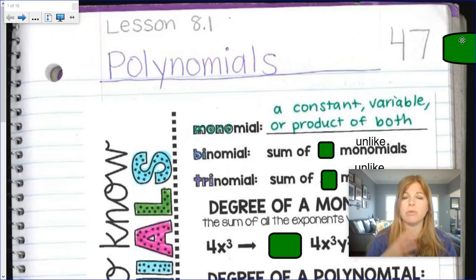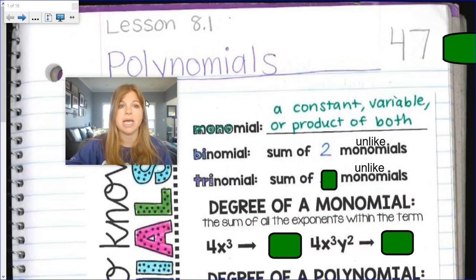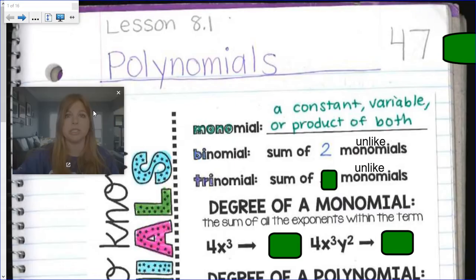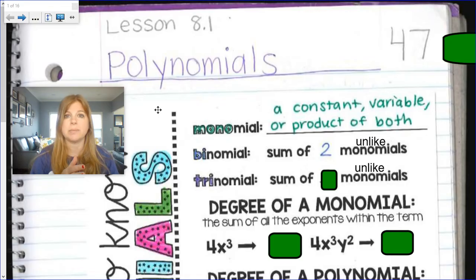So once we know what a monomial is, a binomial is the sum of two unlike monomials. And I say unlike because we need to make sure that we know that 3x plus 5x is not a binomial. 3x plus 5x is actually 8x, so it's a monomial.